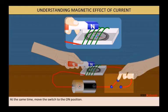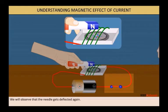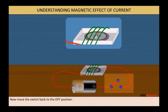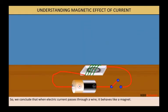Bring a bar magnet near the compass needle. We will observe that the needle gets deflected. At the same time, move the switch to the ON position. We will again observe that the needle gets deflected again. Now, move the switch back to the OFF position. We will observe that the needle comes back to its original position. So, we conclude that when electric current passes through a wire, it behaves like a magnet.